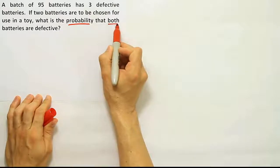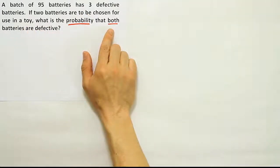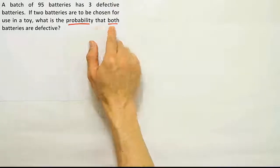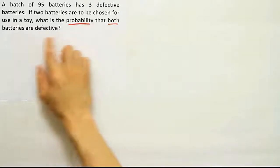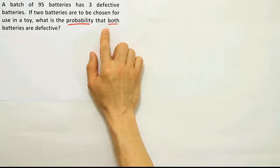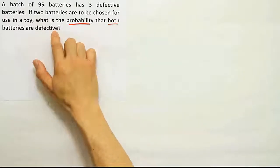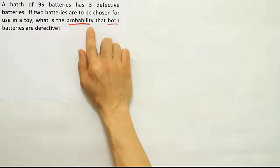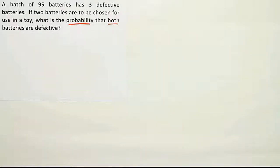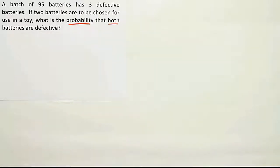It says both batteries are defective, meaning we're selecting two batteries to be chosen for use in a toy. If we're selecting more than one, it's probably the multiplication rule — especially if both items are supposed to do the same thing. In this case, both are going to be defective. So we're not worrying about one being defective and one not. We're looking for the probability that both are defective; they're both behaving the same way. We're selecting two of them, so this is a clear-cut case of the multiplication rule of probability. Anytime you take more than one item, it's most likely the multiplication rule.